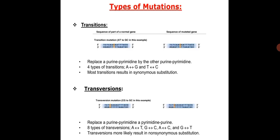In transitions, a purine is replaced by another purine, or a pyrimidine is replaced by another pyrimidine. There are four ways transitions may occur: adenine can replace guanine and vice versa, or thymine can replace cytosine and vice versa. Most transitions result in synonymous substitution.